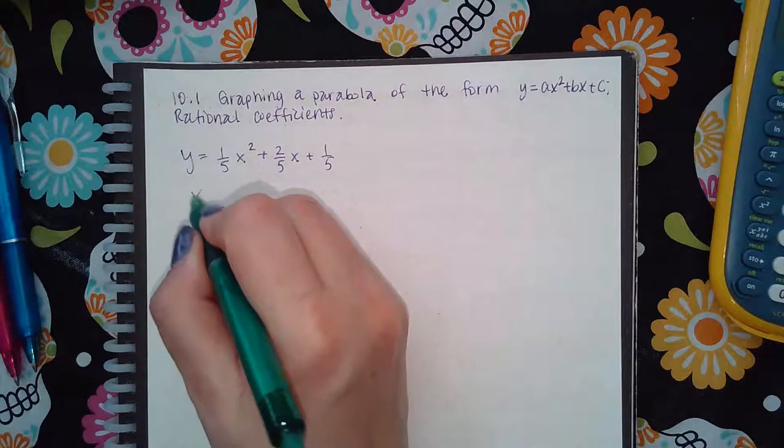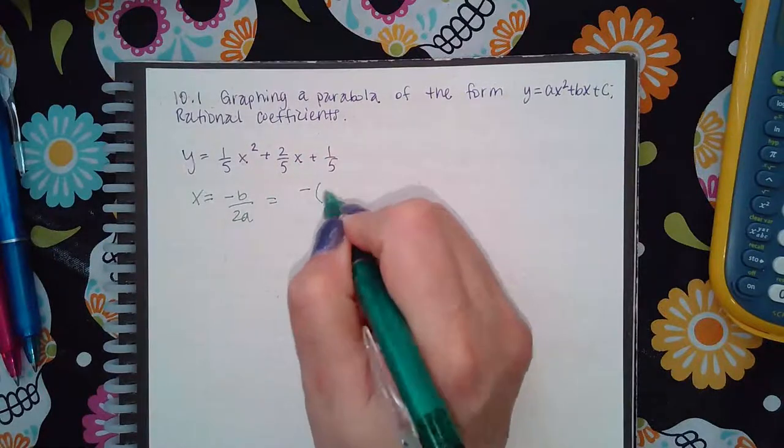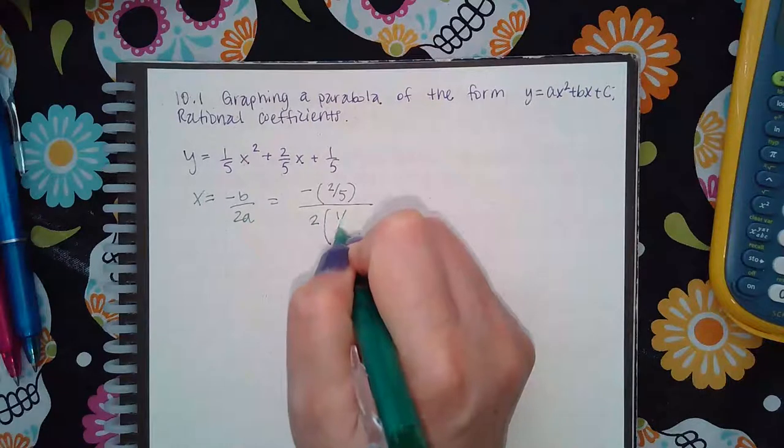We're still figuring out the center by doing negative b over 2a. So b in this case is actually a positive 2 fifths, and a in this case is 1 fifth.